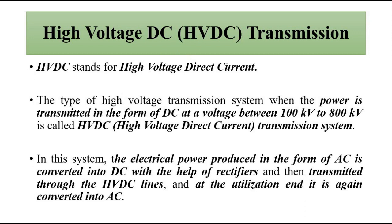The HVDC transmission system is the high voltage direct current system. We will do a comparison between AC versus DC transmission systems to evaluate the merits and demerits of each. Each method has its own advantages and disadvantages, but in certain situations and for specific applications, one transmission system is more suitable. If the merits outweigh the demerits, that particular method is preferred. Depending upon operational requirements, particular methods are used.